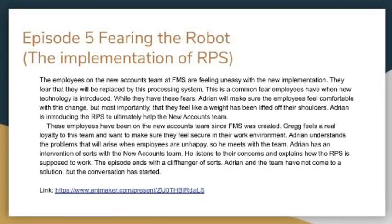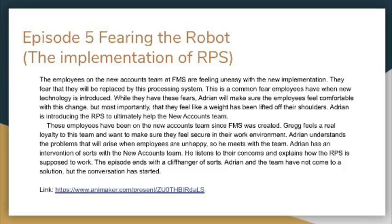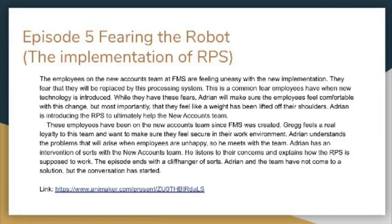In episode five, the focus is on how to effectively manage employee conflict. The RPS has been implemented and the FMS accounts team is feeling uneasy with this new change, fearing they will be replaced by the processing system. While they have these fears, Adrian is adamant to make sure that the employees feel comfortable with this change and that a weight has been lifted off their shoulders. Since the employees have been on the new accounts team since FMS was created, Greg feels a real loyalty to this team. Adrian meets with the team in a sort of intervention, listening to their concerns and explaining how the RPS is supposed to work. The conversation has started by the end of this episode.